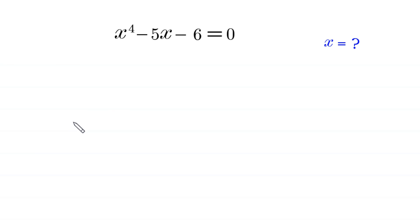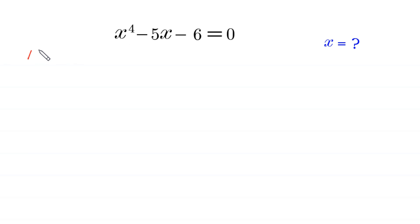Hello everyone, welcome to how to solve this very nice quadratic equation: x to the power 4 minus 5x minus 6 is equal to 0. Our job is to find all possible values of x. We will solve it by two methods. Let us start with Method 1.